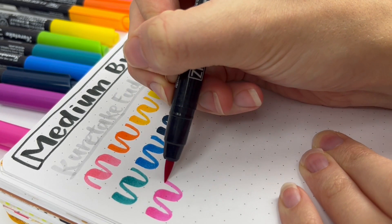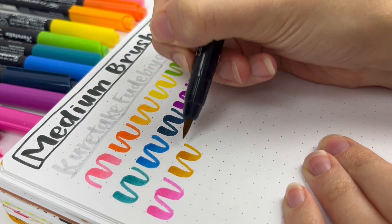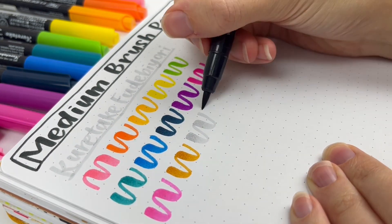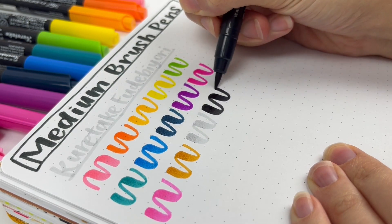I first got my Kuretake Futabiori from Jet Pens, and you can choose individual colors there. There are a few different sets on Amazon including metallic colors, and they're all great.